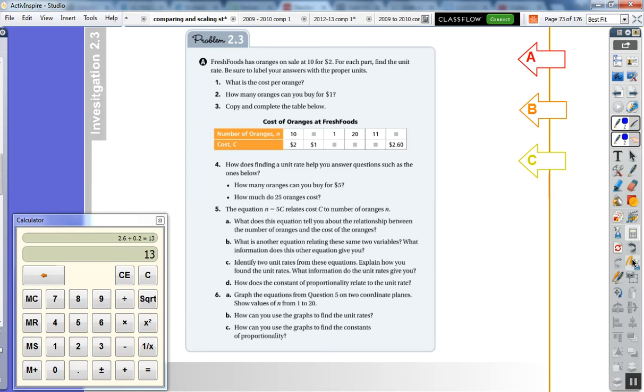How does finding a unit rate help you answer questions such as the ones below? How many oranges can you buy for $5? Well, you know for $1 you can get 5 oranges, so then you can use your proportional reasoning. If you have 1 over 5, that's going to equal 5 over something, and it's going to be multiply by 5, so it's 25 oranges.